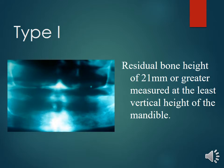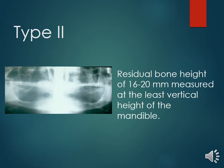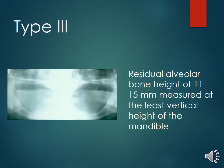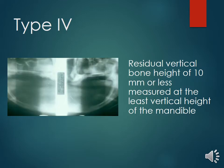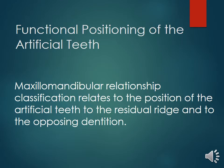Type 1: residual bone height of 21 mm or greater, measured at the least vertical height of the mandible. Type 2: residual bone height of 16 to 20 mm. Type 3: residual bone height of 11 to 15 mm. Type 4: residual vertical bone height of 10 mm or less, measured at the least vertical height of the mandible.